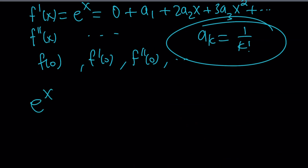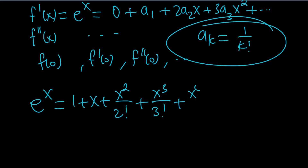So we have e to the x equals 1 plus x plus x squared divided by 2 factorial plus x cubed over 3 factorial plus x to the 4th over 4 factorial, and so on. Now I want to get the sum of the reciprocals of even factorials, so I need to get rid of the odd factorial terms. How do you achieve that? You can negate those terms because of the odd powers.